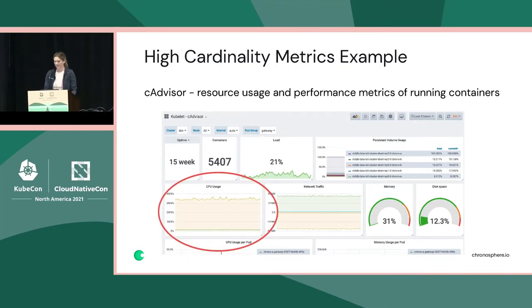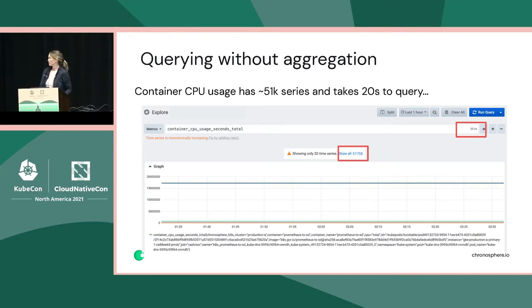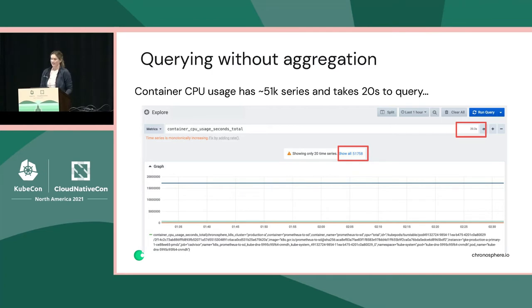Zooming in for this example, we're looking at this particular panel showing CPU usage across all of your gateway pods or containers. You can see it's showing an overview of all of your pods, but behind the scenes, producing these results can lead to quite a bit of time for your queries to fully render. cAdvisor is pulling the container CPU usage metric with labels across all pods in your pod group, resulting in roughly 51,000 time series — taking over 20 seconds to render. And if you did any functions on top like sum or max, it would take much longer.